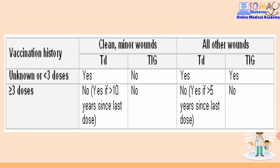What about the immunized patient? If the immunized patient has a clean wound, nothing is needed. We will give tetanus toxoid only if the last dose was 10 or more years ago. For a dirty wound in an immunized patient, we will also give nothing - we will just give tetanus toxoid if the last dose received was more than five years ago.